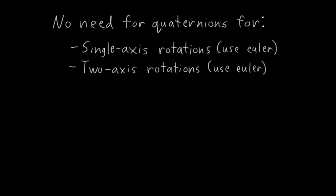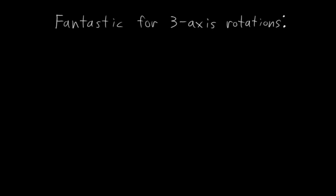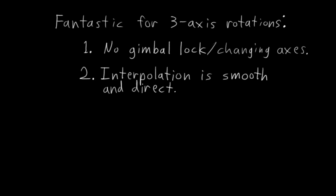But where quaternions really shine is with full three-axis rotations, and here's why. First, no gimbal lock or changing axes, which are a big issue for Eulers. Two, rotation interpolation is smooth and direct, which is often not the case with Eulers in the general 3D case. And three, there are several things that are trivial to calculate using quaternions that are a pain to calculate with other rotation representations, and these are things that are actually useful for rigging.